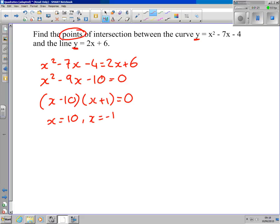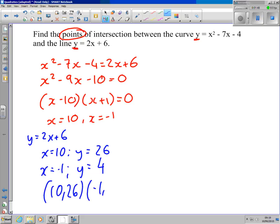Now I'm looking for a point of intersection, so that's not good enough. I need my y coordinate as well. I would use y = 2x + 6 just because it's easier. If x is 10, then y is 2(10) + 6 = 26. If x is -1, y is 2(-1) + 6 = 4. So our two points are (10, 26) and (-1, 4).